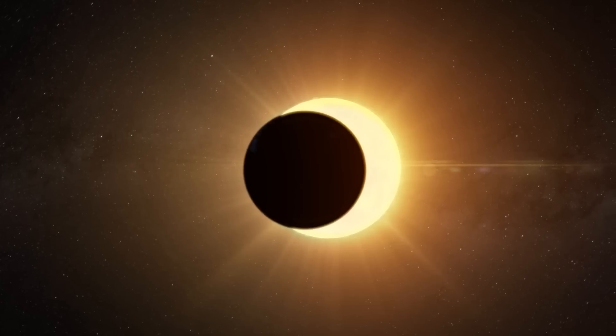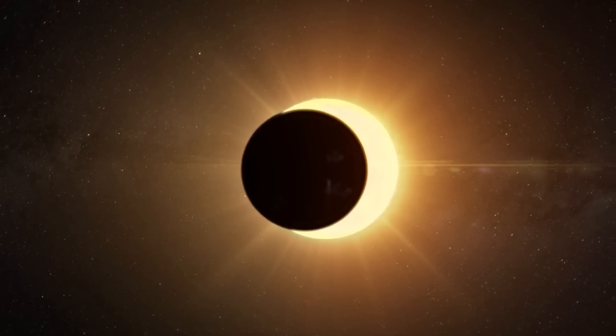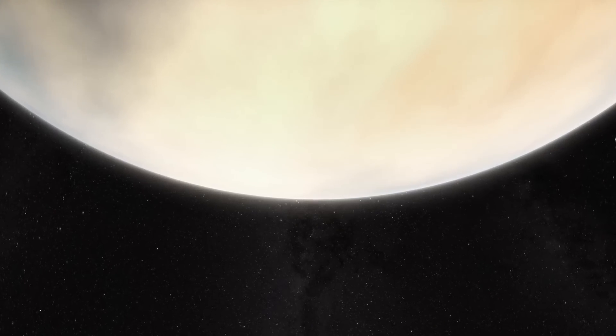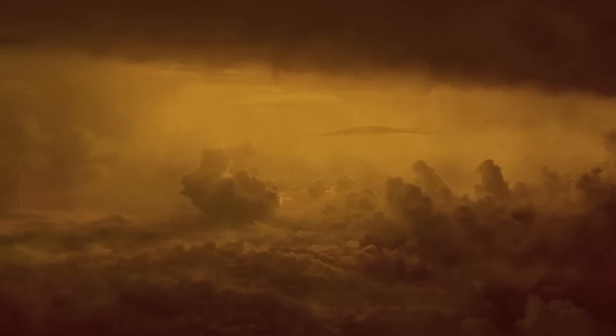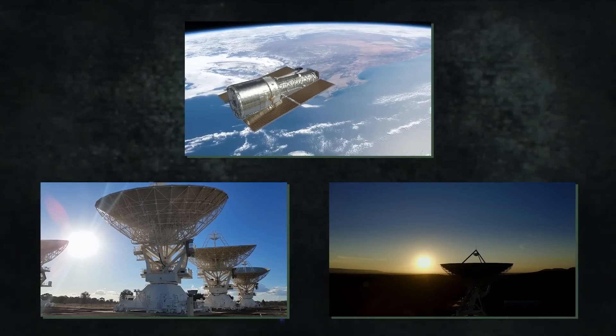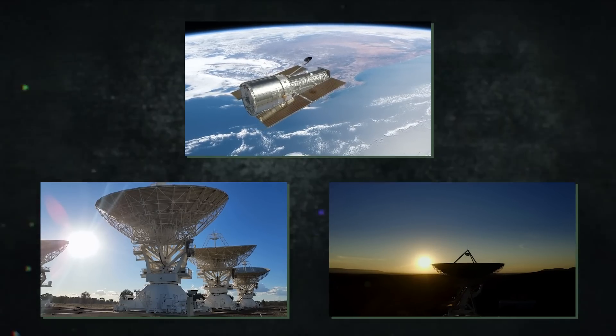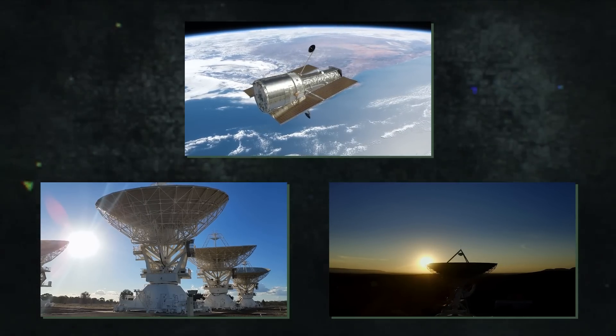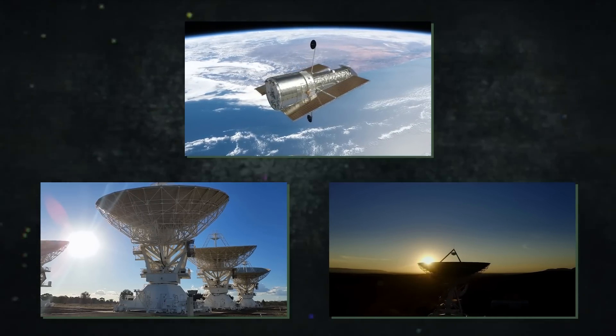In addition, HIP 65426b, a Jupiter-like massive planet located 385 light-years away, has been directly observed by the James Webb Telescope. In contrast to other techniques which involved looking for a planet's shadow rather than the planet itself, the stunning photos of the planet are comparable to taking a picture of it directly.